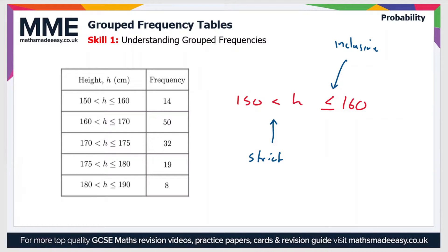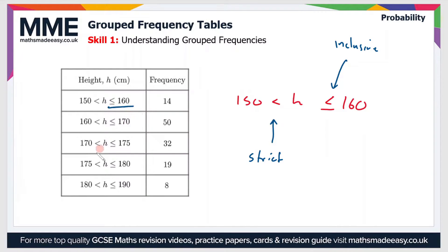There's a very specific reason why we do this — it's to prevent overlap at the edges of each group. If I had a height of 160 centimeters, I would be included in the first group but not in the second group.